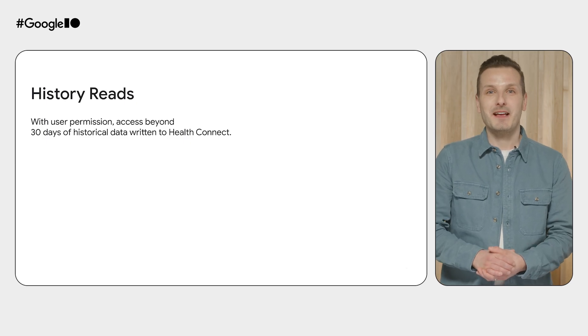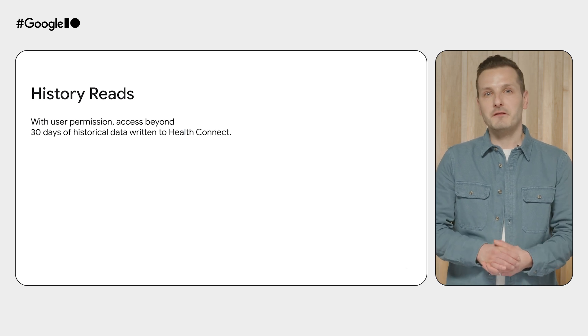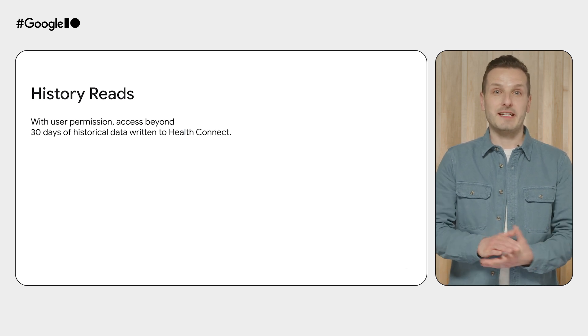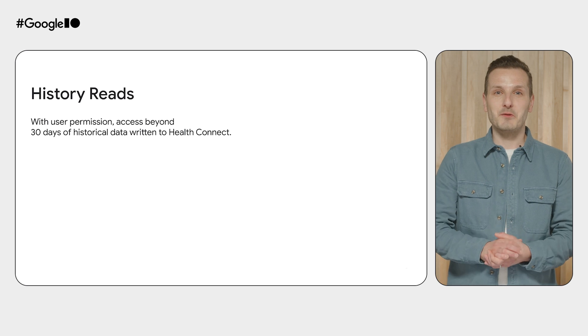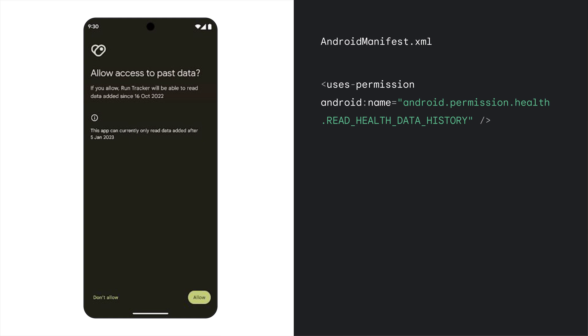The next feature is history reads. Health Connect compatible apps have been able to access up to 30 days of past health data from the permission granted date. Soon, users will be able to choose to share historical data with your app, allowing you to get a more complete picture and view of your trends and unlock powerful insights. You enable this functionality in a similar way to background reads: first, you'll declare the history permission in your app's manifest. At runtime, after the user grants access, your app can read historical health and fitness data. Users can revoke both background and history permissions at any time through Health Connect settings. We'll be releasing new documentation for these features in the coming months.